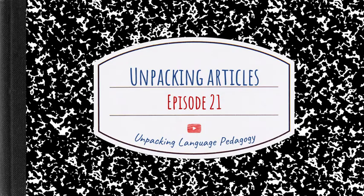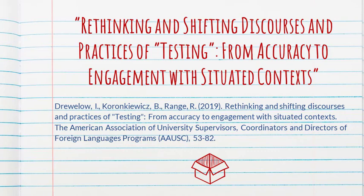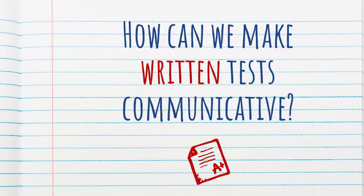Hello and welcome to Unpacking Articles. The article we're going to unpack today is called 'Rethinking and Shifting Discourses and Practices of Testing, From Accuracy to Engagement with Situated Contexts.' Even though this chapter focuses on language programs at the university level, the ideas are applicable to many different contexts. The article focuses on written tests, and the core question is: how can we make written tests more communicative?